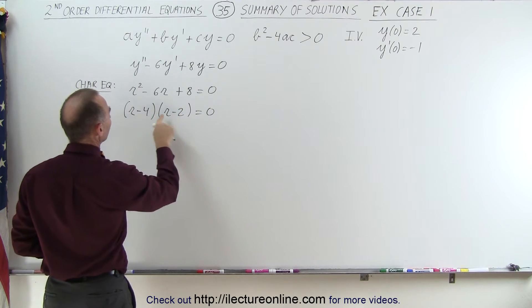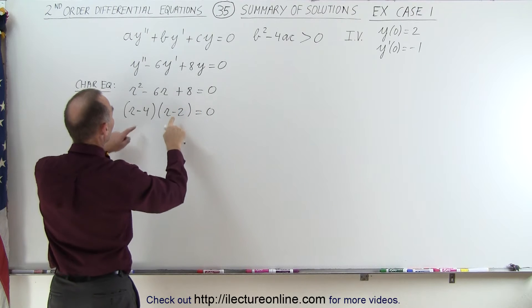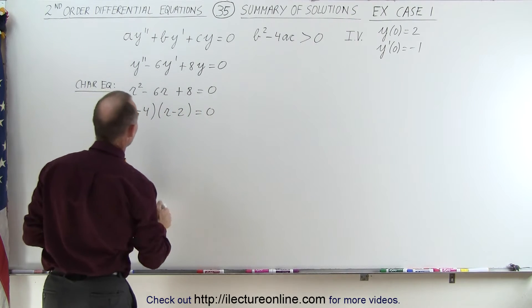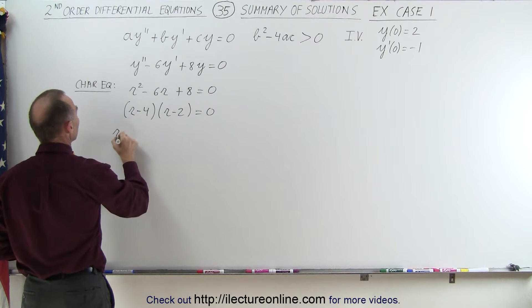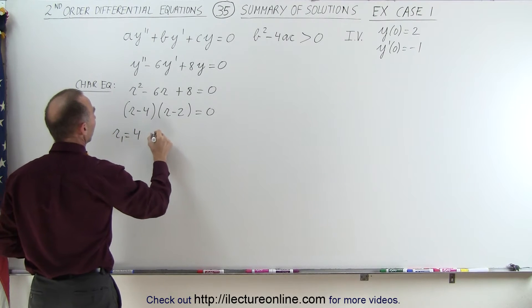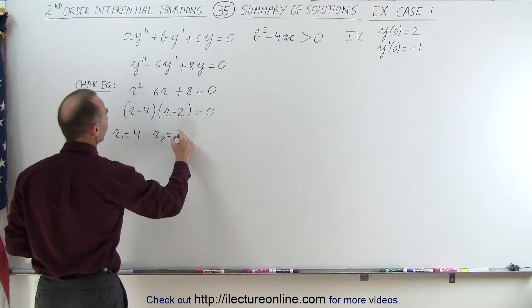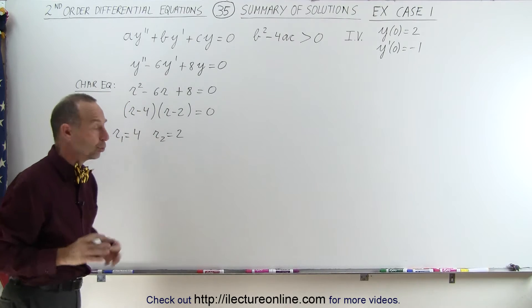Because minus 4 times minus 2 gives us plus 8, and minus 4 minus 2 gives us minus 6. And therefore root 1 is equal to 4 and root 2 is equal to 2. So we have the two roots.